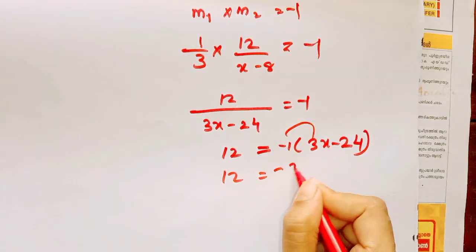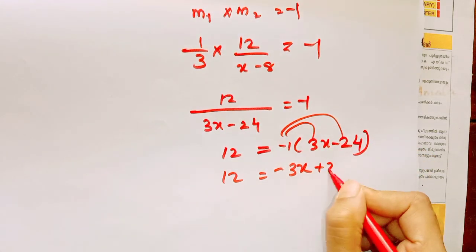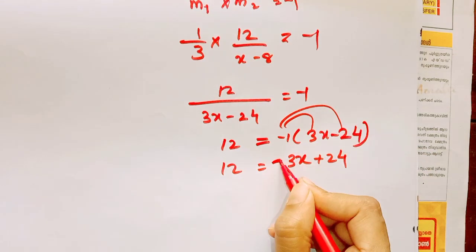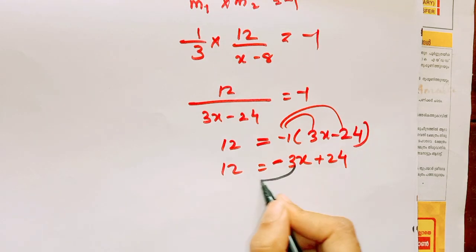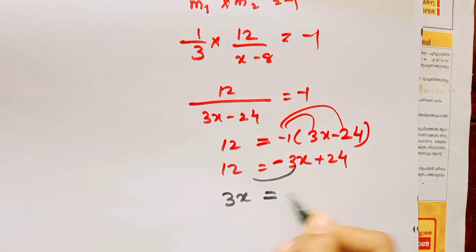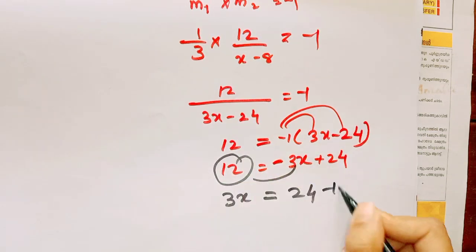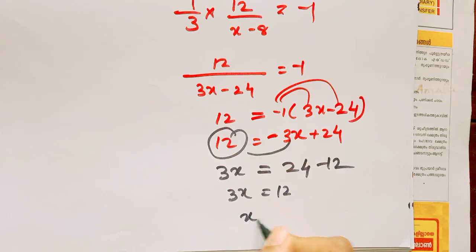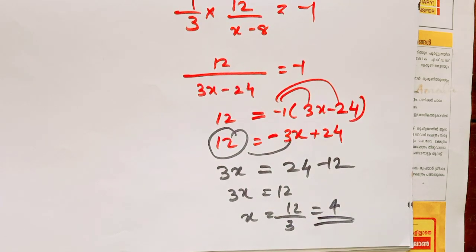We get 12 equals minus 1 into 3x minus 24, giving us minus 3x plus 24. Rearranging: adding 3x to both sides. If we add only 24, then 12 is minus 12. So 3x equals 12, and x equals 12 by 3, which equals 4.